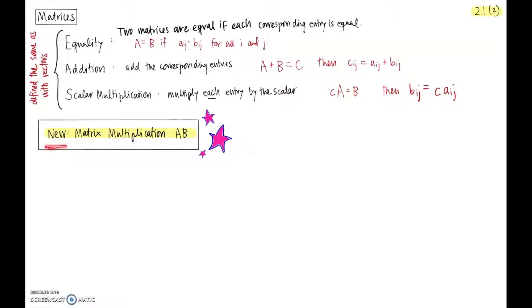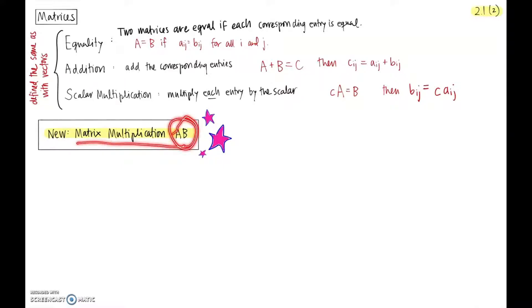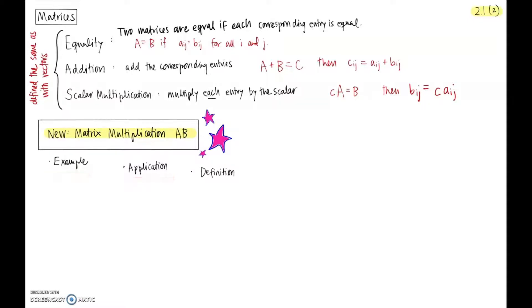The new operation we haven't seen before in our work with vectors is matrix multiplication. We're going to take two matrices — they don't even have to be the same size, but they do have to adhere to certain size requirements. We're going to multiply them together in a way that's not completely obvious at first. We'll introduce this through an example and an application, then give the formal definition.